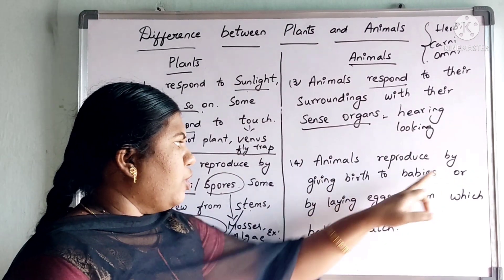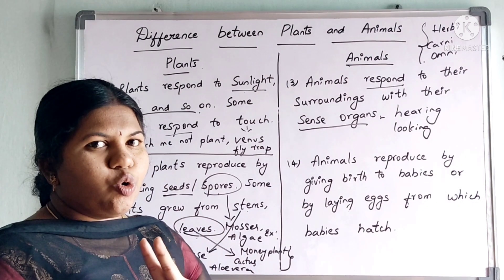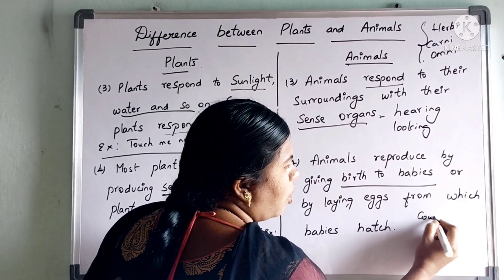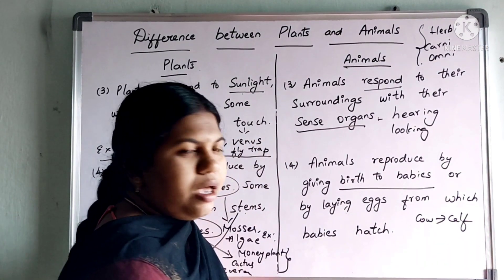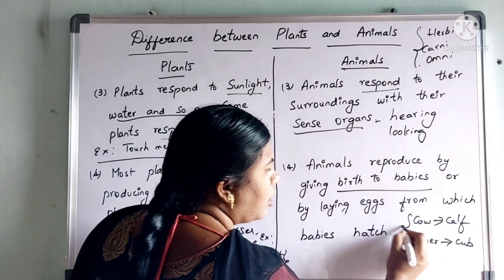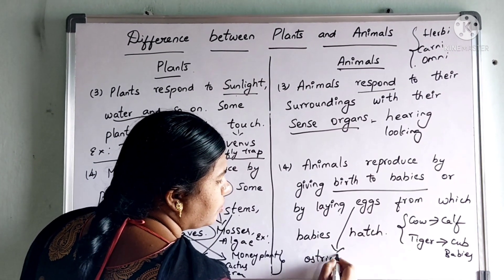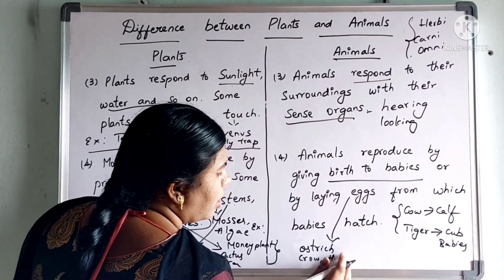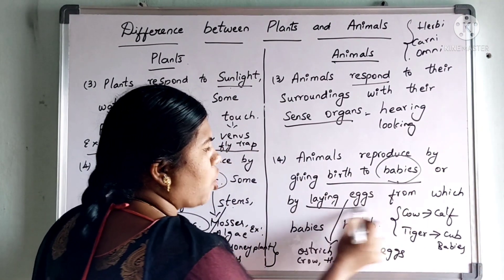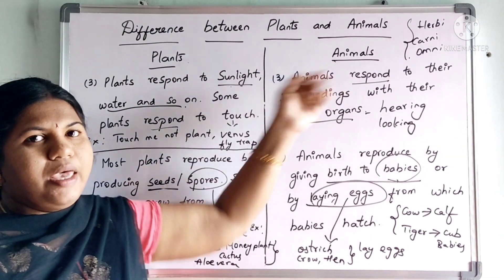Coming to the animals — animals reproduce by giving birth to babies or by laying eggs from which the babies hatch. There are two methods. Either by giving birth to babies — for example, a cow gives birth to a calf, and wild animals like a tiger or a lion also give birth directly to their young ones. Or by laying eggs — for example, ostrich, crow and hen all lay eggs. In this way, we can differentiate plants from the animals.